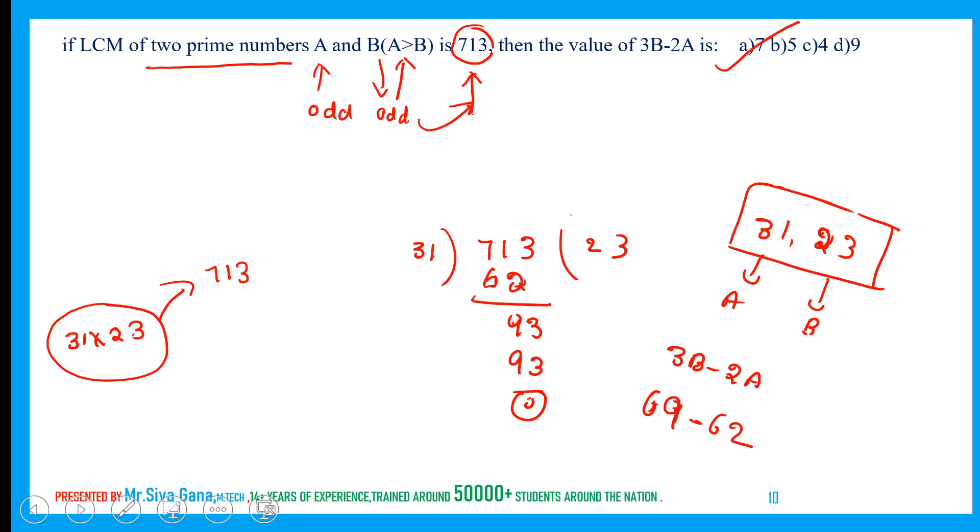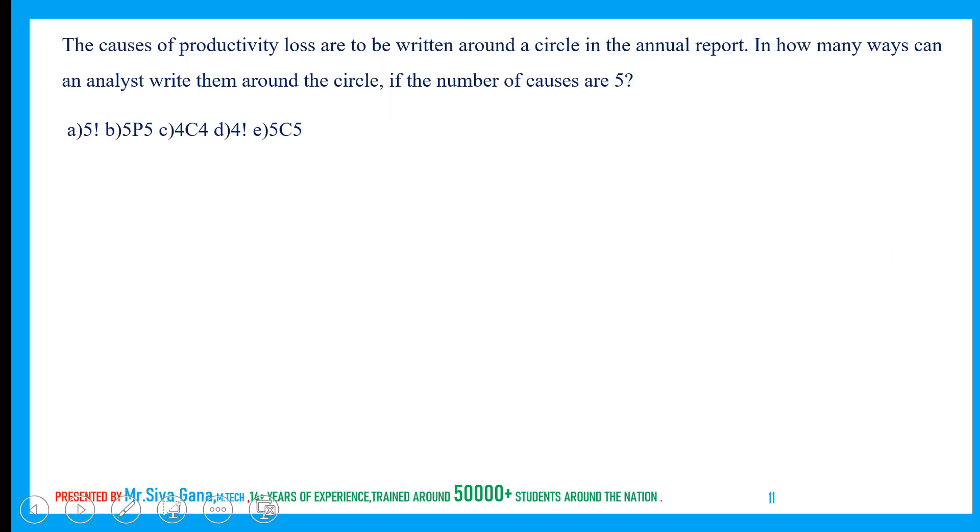The causes of productivity loss are to be written around a circle in an annual report. In how many ways can analysts write them around the circle if the number of causes are 5? Simply, the arrangement of n different things around a circle can be done in (n-1) factorial ways. 5 minus 1 equals 4 factorial, which is 24.